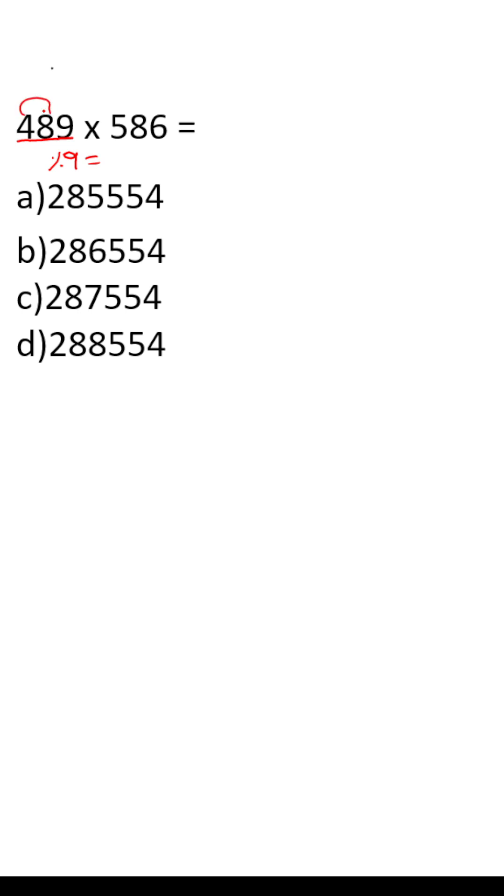Here the digit sum is 4 plus 8, 12, 12 plus 9 is 21. 21 when divided by 9 gives the remainder 3. Here 5 plus 8, 13, 13 plus 6, 19. 19 when divided by 9 gives the remainder 1. Digit sum here is 3. Digit sum here is 1.